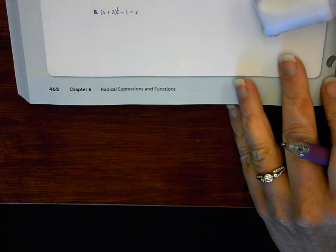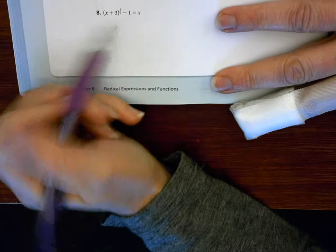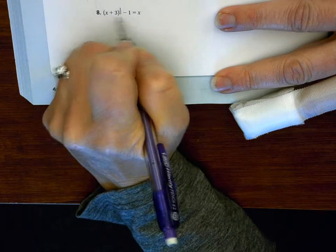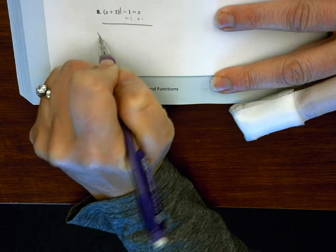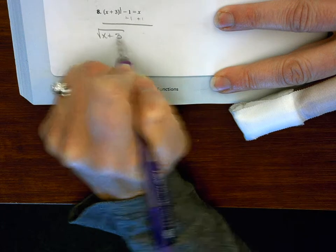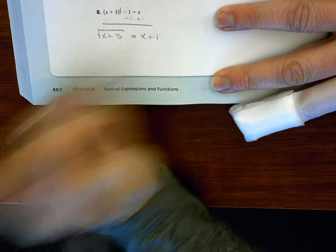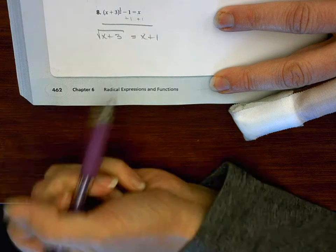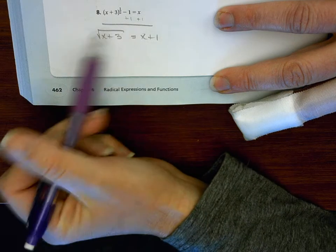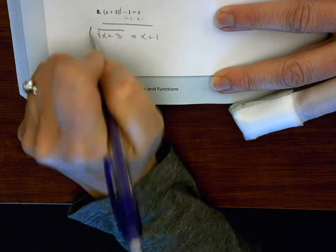Okay, so the first thing I want to do is I know to the 1 half power is the same as the square root. So I'm going to rewrite that, and then I'm also going to add 1 to both sides. So to the 1 half power is the square root, and then add 1. So now there's nothing else outside of the square root, so I'm going to square both sides.